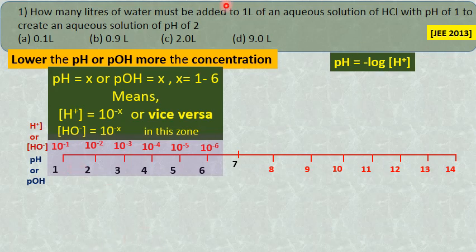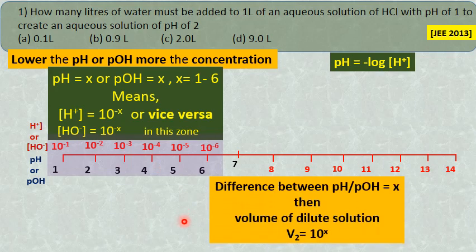Let us see how to solve this question — a very simple method. Take the difference between the two pH values: lower pH and higher pH. The difference between 2 and 1 is 1.